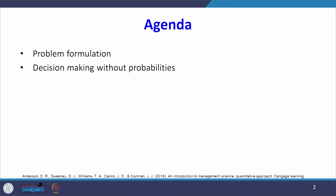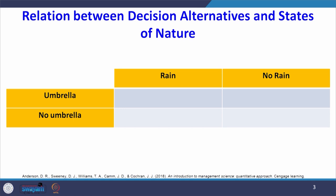I am going to explain the relationship between decision alternatives and states of nature in a decision analysis. Look at this table — the rows represent umbrella and no umbrella, in the column there is rain and no rain. Whatever is on this side is called decision alternatives. Decision alternative is something on your hand — you have control over it. For example, whether you carry an umbrella or not is called a decision alternative.